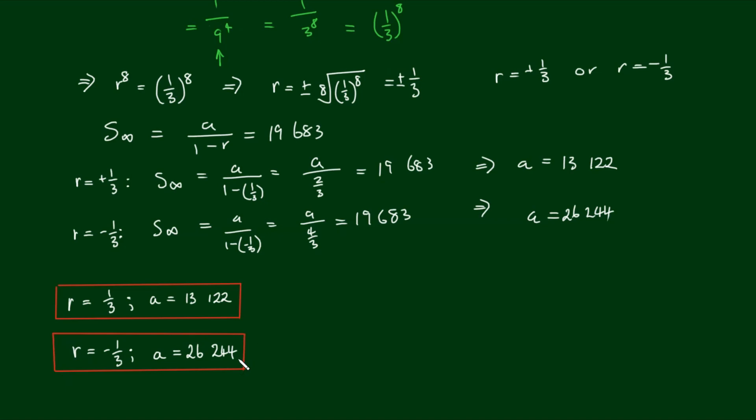And this will make sense because for when r is equal to negative 1 third, we're going to have an alternating sequence of positive and negative numbers. Whereas with positive 1 third, we just have a sequence of ever diminishing positive numbers. So to get to the same final sum, we do have to start with a larger number for the alternating sequence.